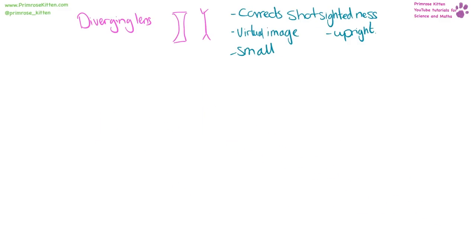Your diverging lens is going to be curved in like this and this is the shorthand. It's going to correct short sightedness. It's going to give us a virtual image which is upright but smaller.